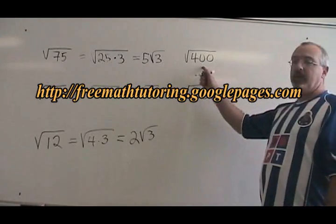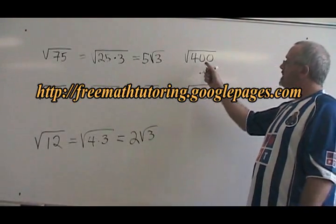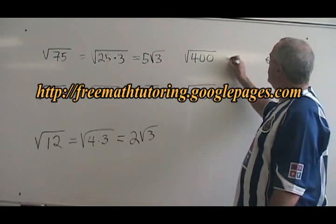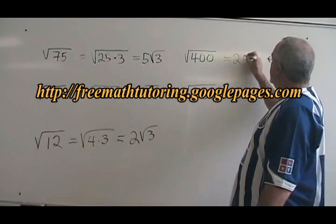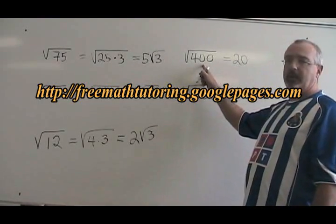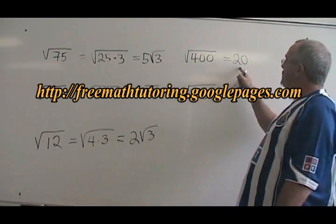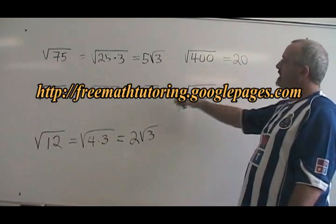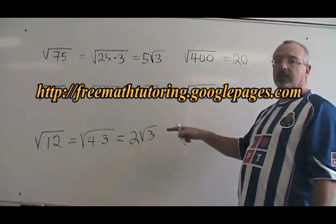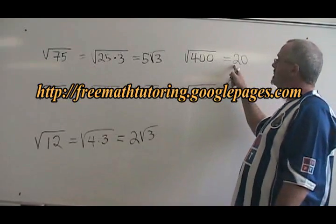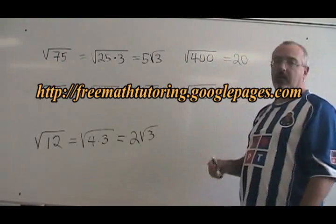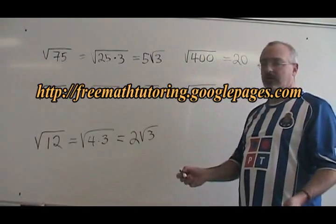Here's one that's a bit of a trick question. The square root of 400 is 20. If you can solve it this way, it's more simplified because it doesn't have a radical in the answer at all — it's also faster. So keep your eyes open for numbers inside the radical that are already a perfect square.